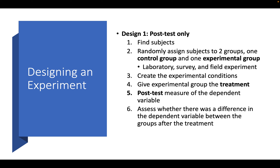There are two different designs associated with an experiment. One is called post-test only, and the other is called pre-test and post-test. Focusing on the post-test only design: first, we need to find subjects. Then we randomly assign subjects to two groups — one is called a control group, and the other is called the experimental group. This is true for laboratory, survey, and field experiment variations. Then we create the experimental conditions: we give the experimental group the treatment, and we give the control group no treatment.